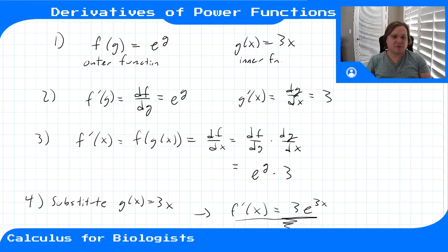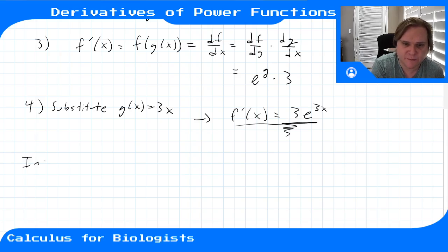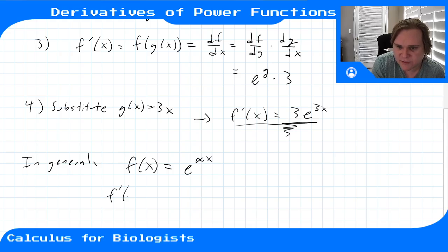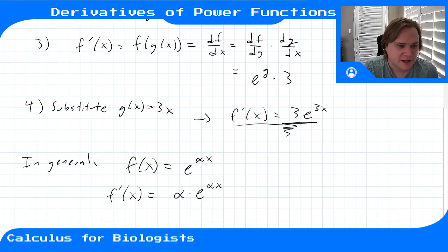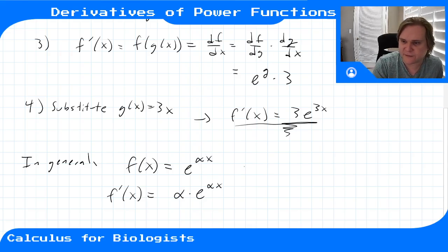This is generally going to be the rule with exponentials. In general, by using the chain rule, for f(x) = e^(αx), f'(x) = α·e^(αx). The outermost function is the exponential, the innermost function is αx, so the derivative is: leave the exponential alone and multiply by the derivative of the inside, giving you α·e^(αx) for any α.